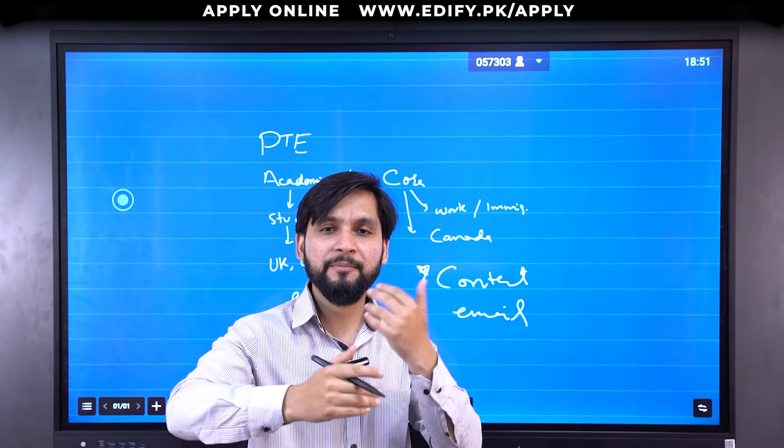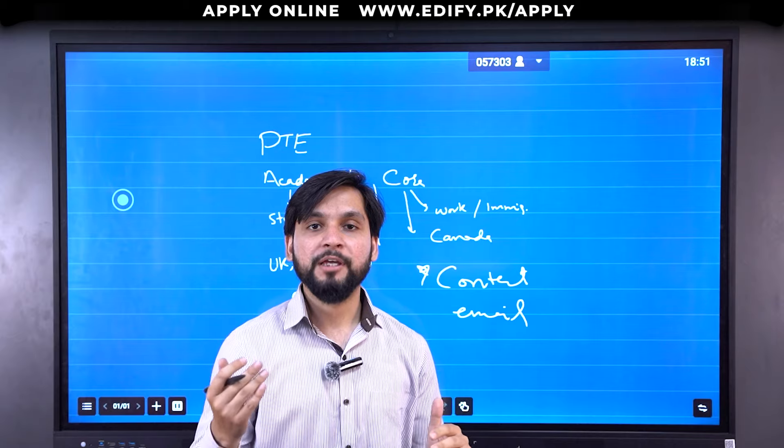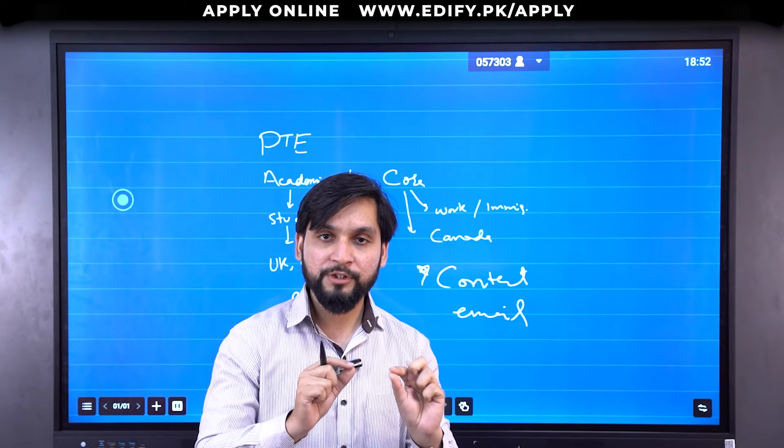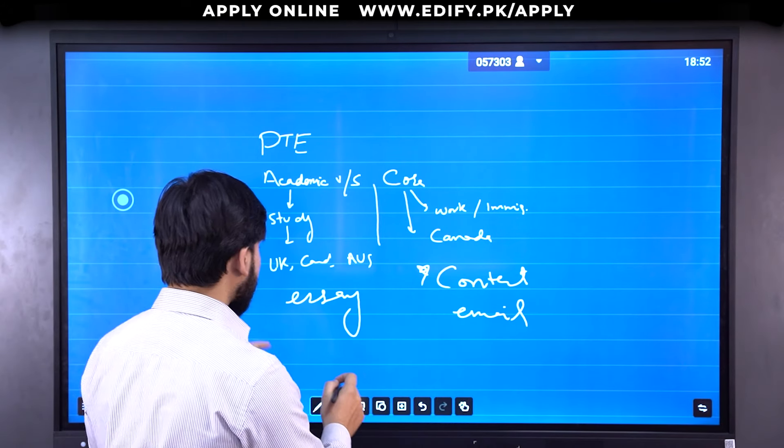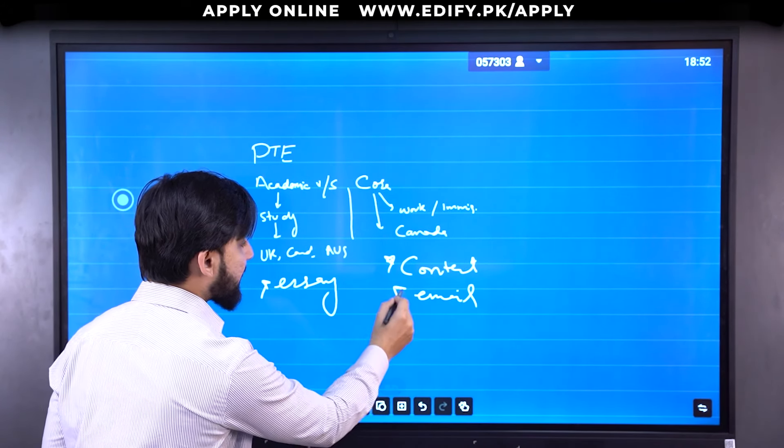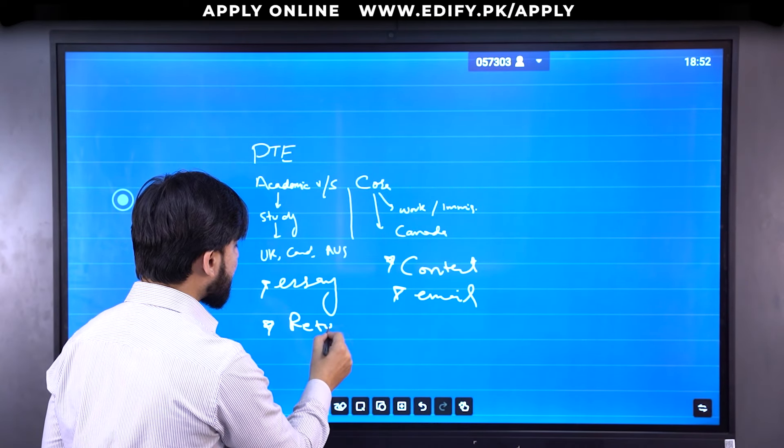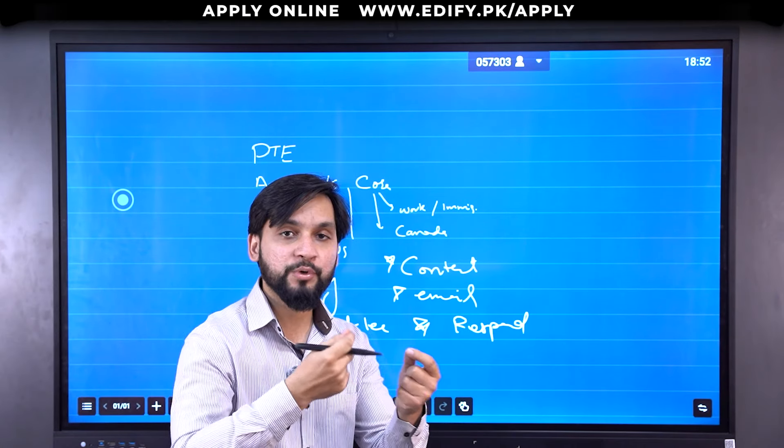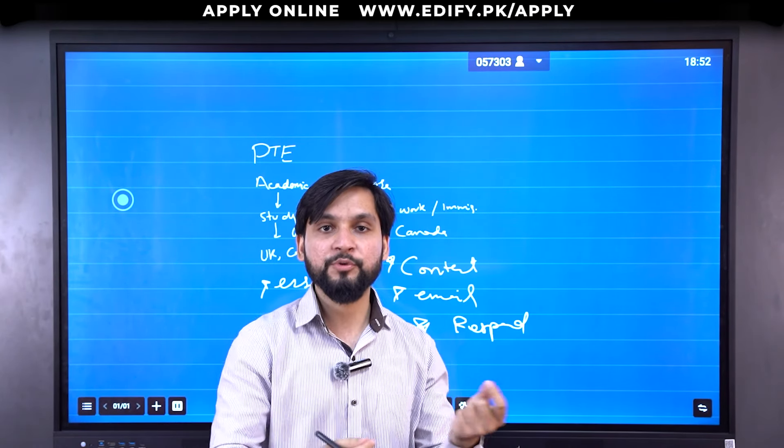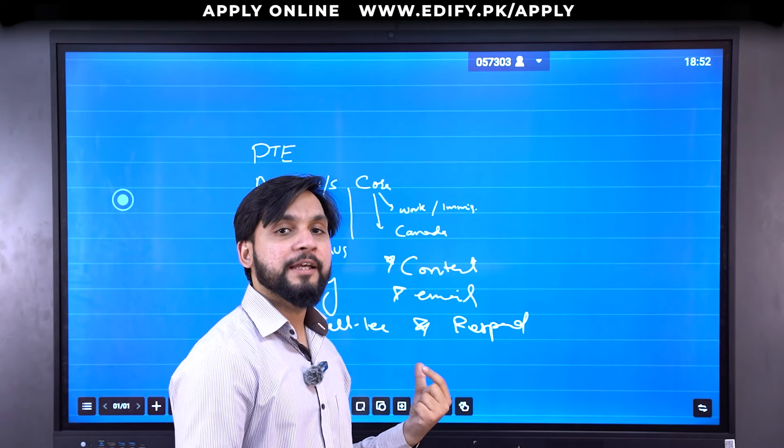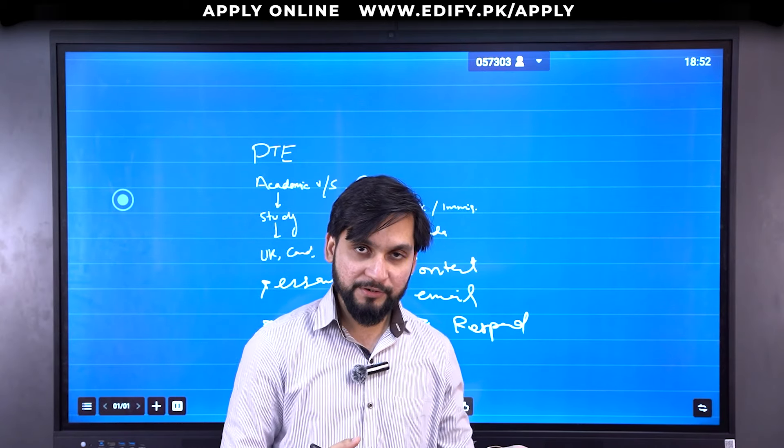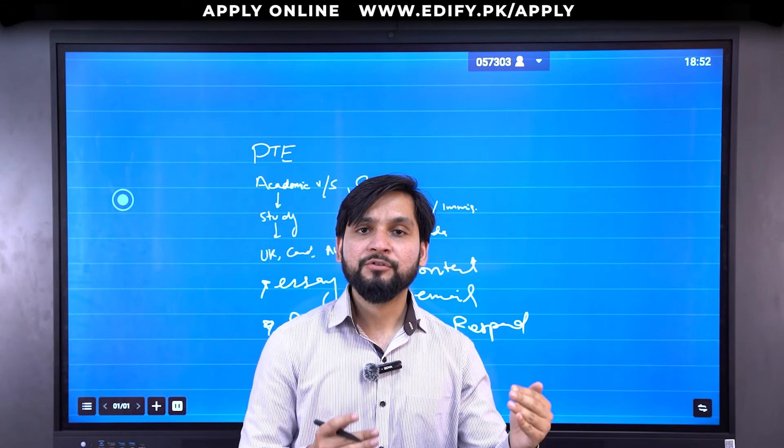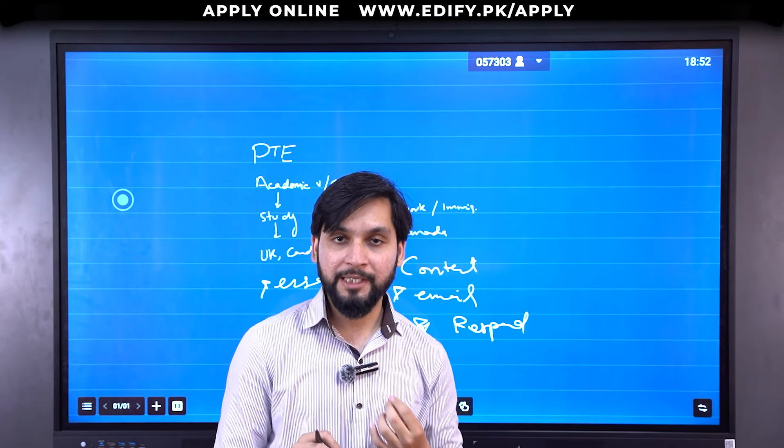The second question is different. For reading and writing, just like the summary in Academic, in Core we have email. Fill in the blanks and the reading portion like reorder paragraph will remain the same. Listening questions will also remain the same.